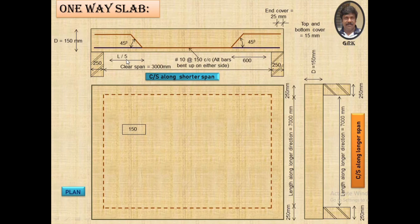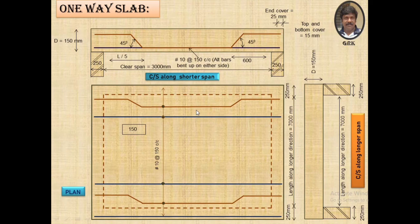The bent is made at a distance equal to L/5 from either support. The span is 3000 mm, so L/5 works out to be 600 mm. Alternative bars bent up on either side means one bar is kept straight, the next bar is bent up, then straight, bent up, and so on, placed along the length of the longer direction. This main reinforcement is of 10 mm diameter placed at 150 mm center to center.